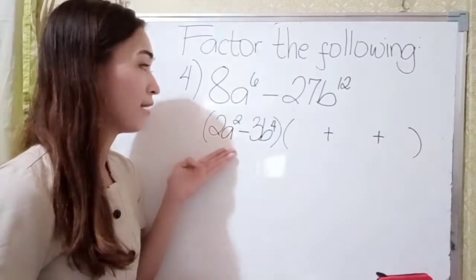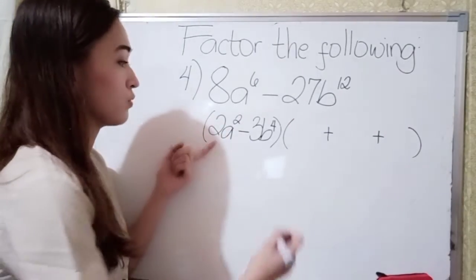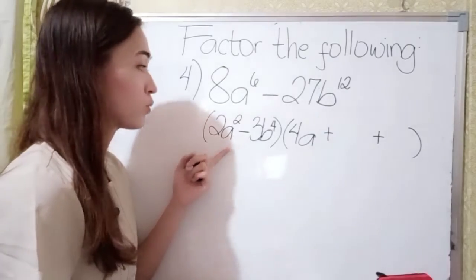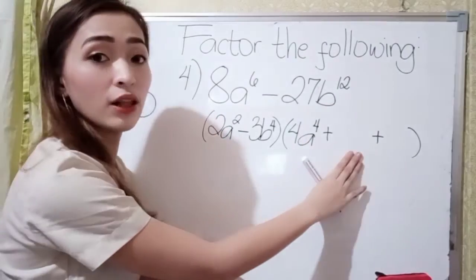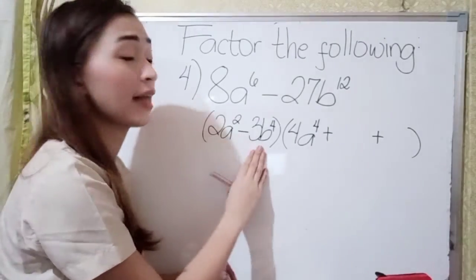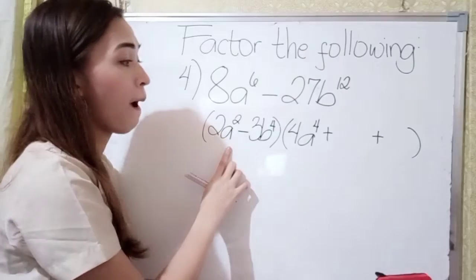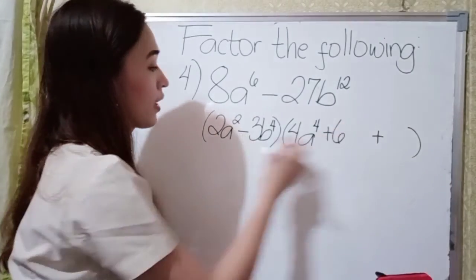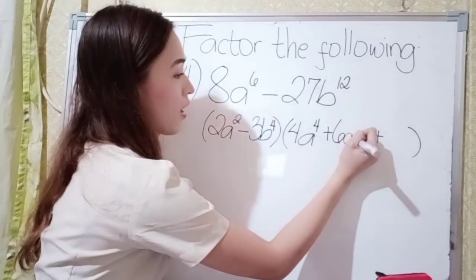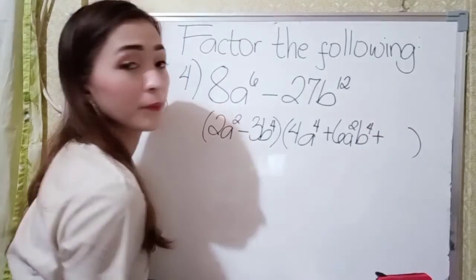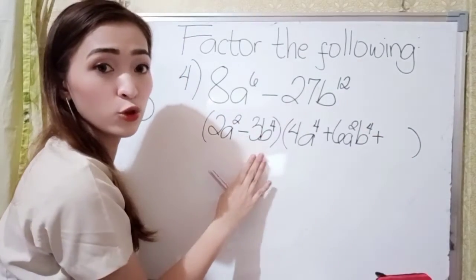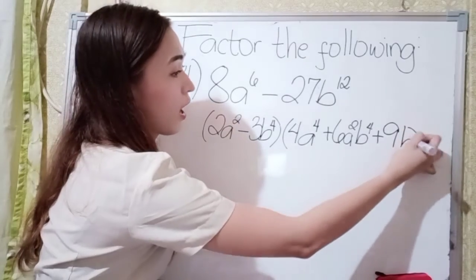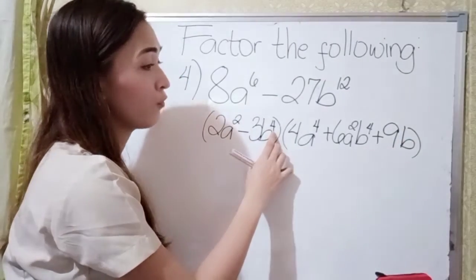For our first term, we have to square the first term. 2 times 2 is 4. We have a, and then multiply the exponent by 2 — 2 times 2 is 4. So, we have 4a to the 4th power. In our middle term, multiply the first and last term: 2a squared times 3b to the 4th power — 2 times 3 is 6, so we have 6a squared b to the 4th power. In our last term, square the last term: 3 times 3 is 9, and we have b, multiplying the exponent by 2 — 4 times 2 is 8.